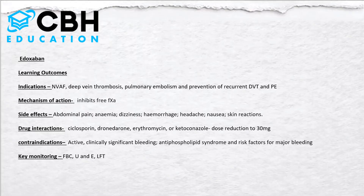Edoxaban is licensed for the prevention of stroke and systemic embolism in adults with non-valvular atrial fibrillation with one or more risk factors, which include heart failure, hypertension, age over 75 years, and diabetes. It's also licensed for deep vein thrombosis, pulmonary embolism, and the prevention of recurrent DVT and PE.